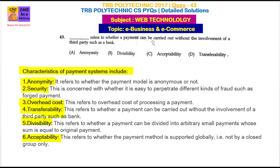This refers to whether the payment can be carried out without the involvement of third parties such as a bank. So, the first question is: if a payment is made without the involvement of a bank, what is the characteristic name? The answer is transferability.